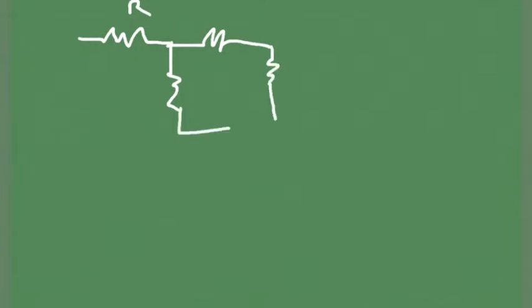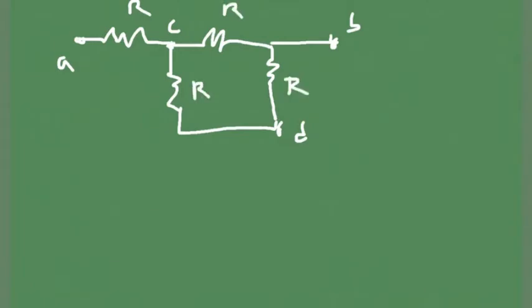Let's look at a more complicated circuit. We have resistors here, and this is point B, this is point A, C, and D. All the resistors are identical — they're all R. So let's calculate the equivalent resistance between A and B.